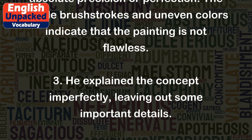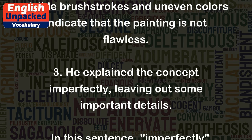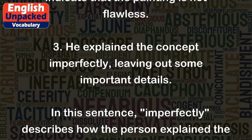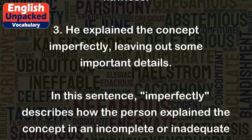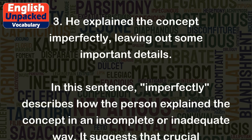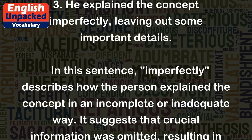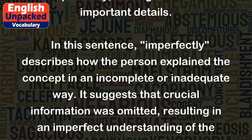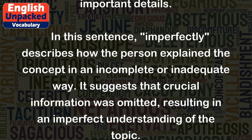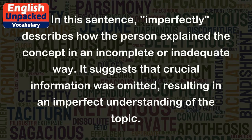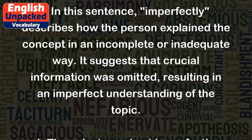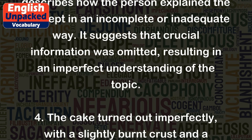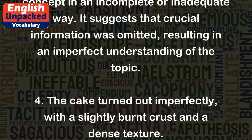The visible brush strokes and uneven colors indicate that the painting is not flawless. Three. He explained the concept imperfectly, leaving out some important details. In this sentence, imperfectly describes how the person explained the concept in an incomplete or inadequate way. It suggests that crucial information was omitted.